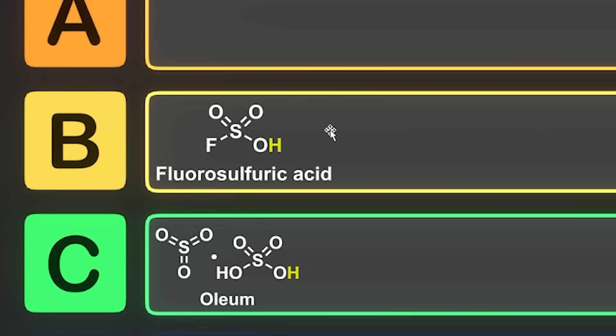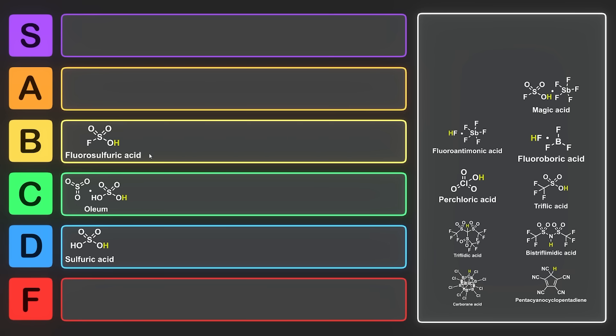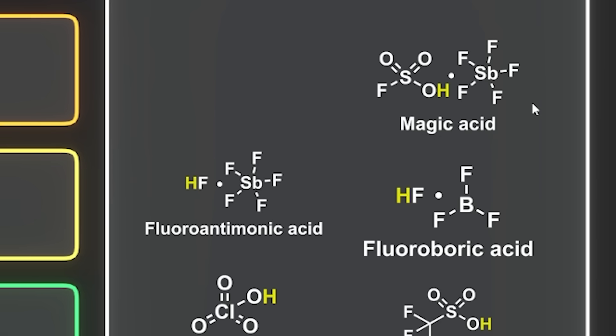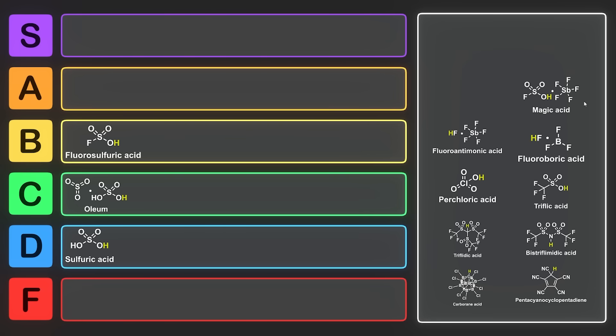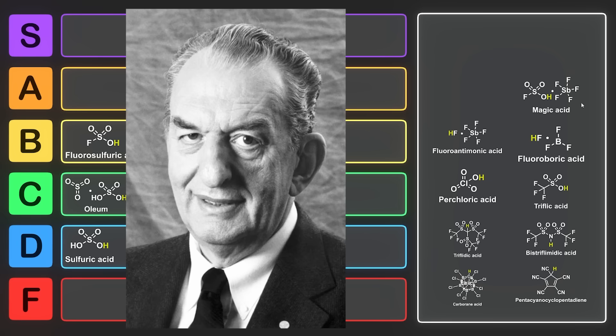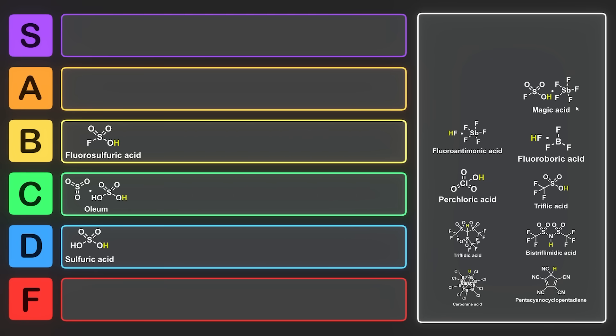Now what can happen is you can start mixing these with each other, and you start getting some crazy stuff happen. Sometimes you can mix the two chemicals, sometimes you have to just take inspiration from one chemical and apply it to the other. But one of the things you can do is mix fluorosulfuric acid with antimony pentafluoride. This forms a mixture known as magic acid. Magic acid was something discovered by George Olah, and he had this demo at a Christmas party where he showed his grad students that he could dissolve a candle with it.